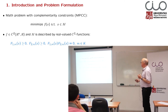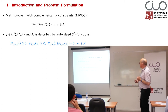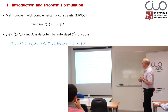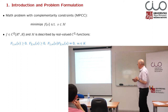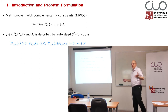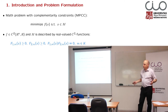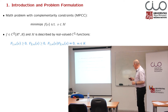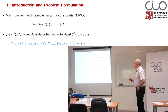So what is a mathematical problem with complementarity constraints, which I will further on abbreviate as MPCC? Mainly it is to minimize a function — which is always what we are doing in optimization — subject to a feasible set M, and the feasible set M has a particular structure.